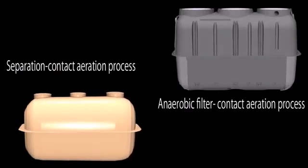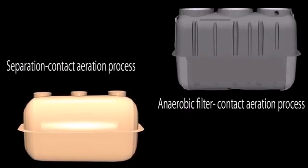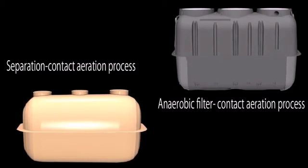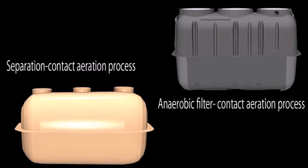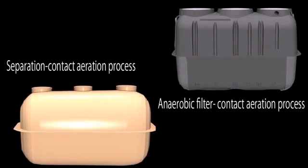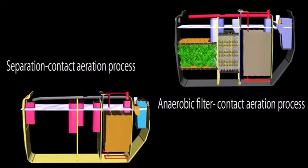The small-scale Jokaso includes two processes. One is the separation contact aeration process, which is a combination of a sedimentation separation tank and a contact aeration tank.